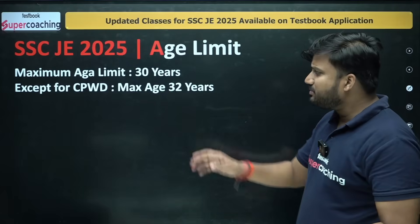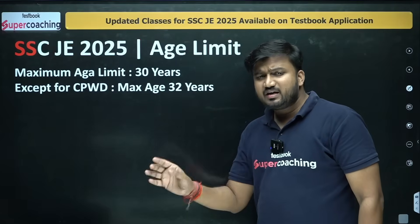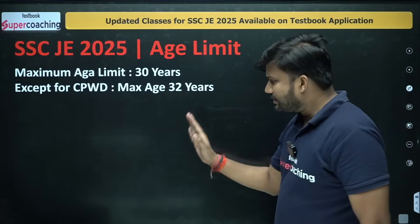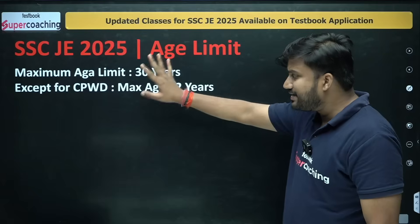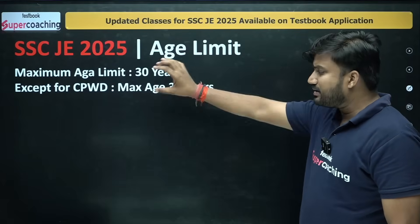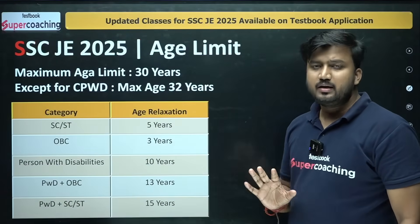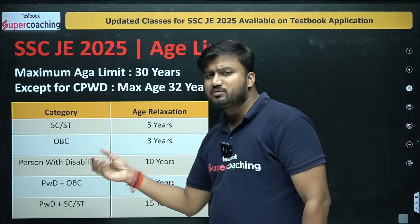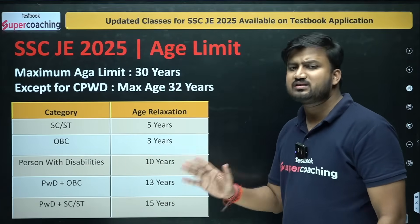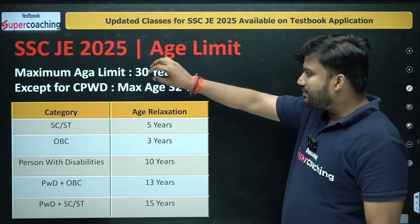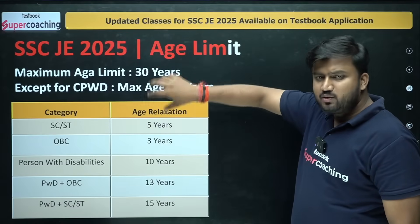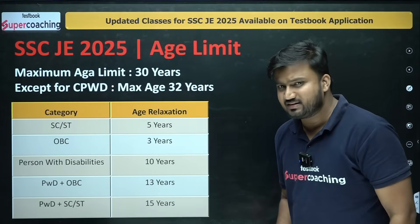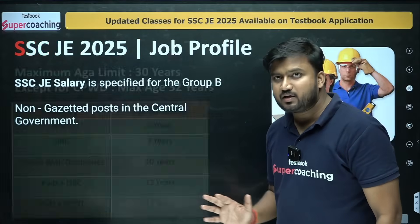The maximum age limit is 30 years. However, for CPWD specifically, you can apply up to 32 years. These age limits are for the General category. If you belong to SC, ST, OBC, or any other category, age relaxation is also provided by SSC, so you can add that relaxation to determine the maximum age applicable to your category.